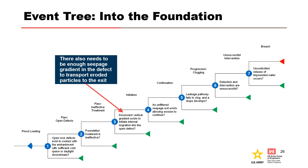Node 4 is continuation: an unfiltered exit exists. Node 5 is progression: the leakage pathway fails to clog. Node 6 is intervention: detection and intervention are unsuccessful. And finally, Node 7 is breach: an uncontrolled release of impounded water occurs.